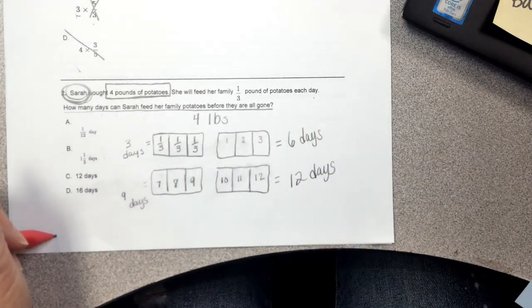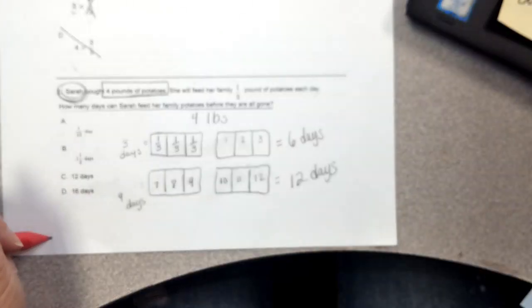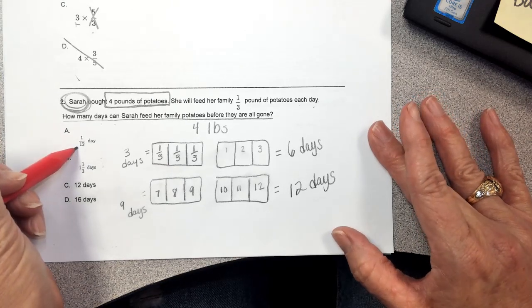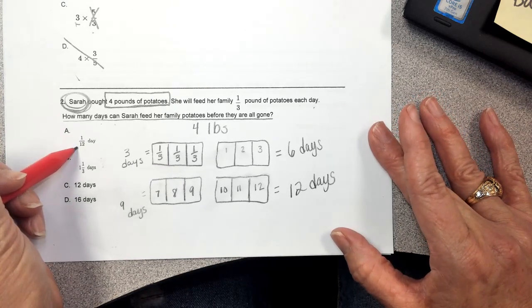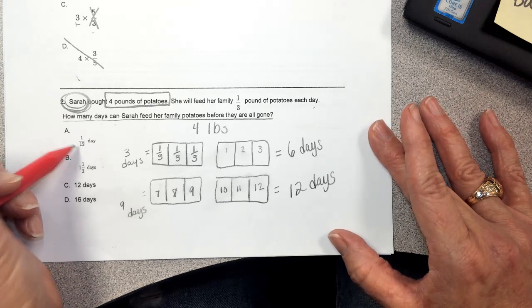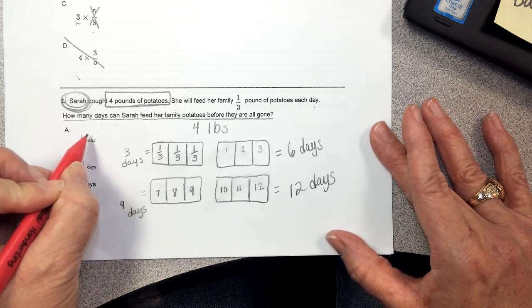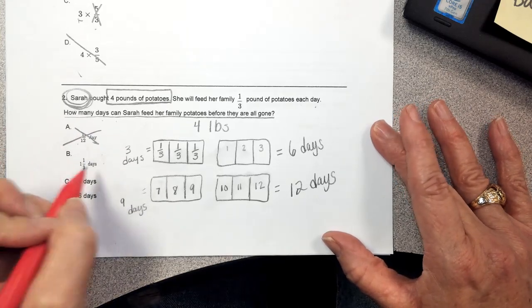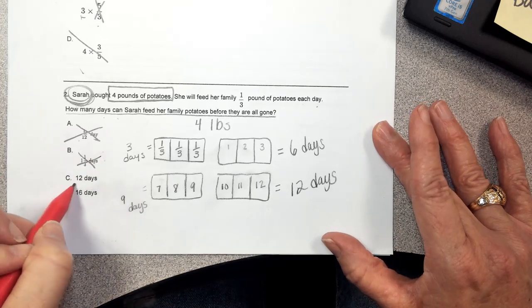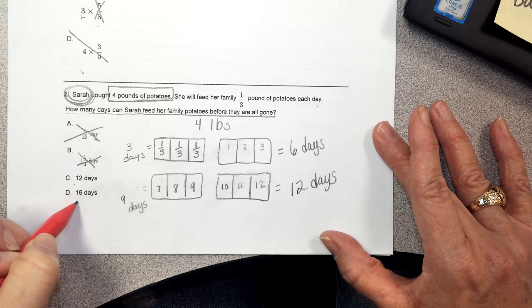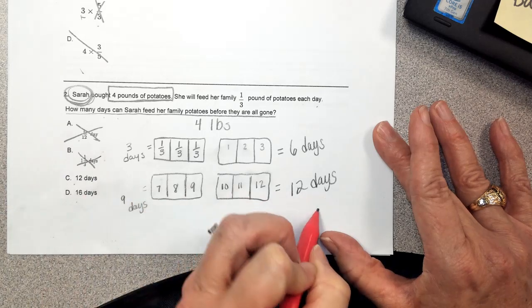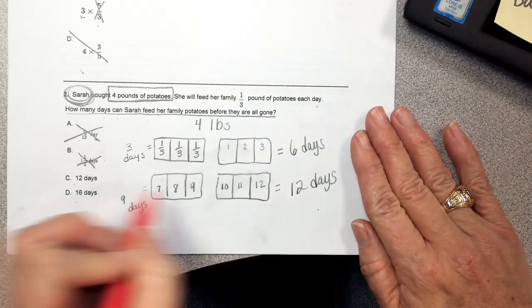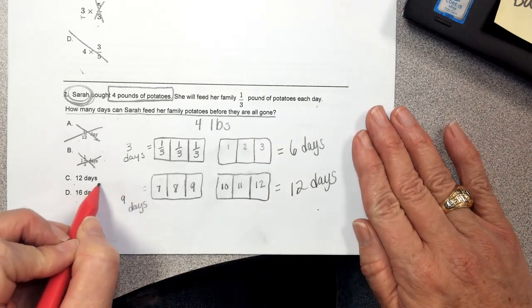So when I go back and I look at my answer choices, first of all, I see a twelfth of a day. Well, that hardly makes any sense because I wouldn't want to feed my family a twelfth of a day. That would be like no time. So I'm going to get rid of that. That doesn't even make good sense. One and one-third days doesn't make sense either. Then I have my options of 12 days or 16 days. And I can see from the picture that we have drawn on our paper that we have 12 days. I'm going to go ahead and circle 12 days.